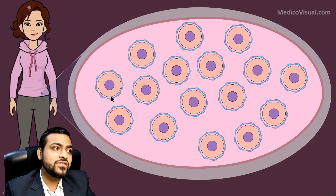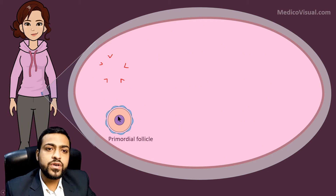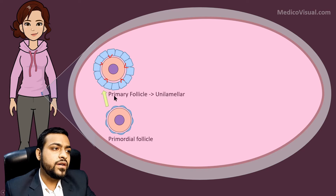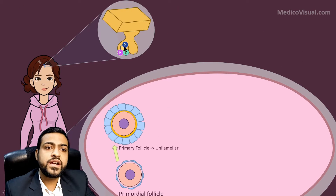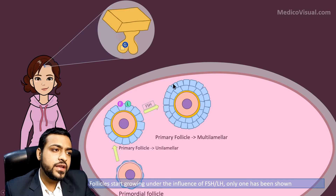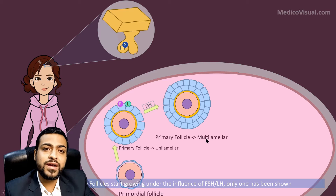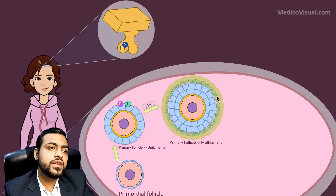This young teenage girl is just starting puberty, and her ovary consists of lots of primordial follicles, each containing a primary oocyte surrounded by a layer of follicular cells. The follicular cells grow and form a primary follicle, along with a glycoprotein coat called zona pellucida. Follicular cells cannot proliferate without orders from FSH and LH, which are released under the orders of GnRH. These gonadotropins cause proliferation of follicular cells, making the follicle multilayered — a multilaminar primary follicle. Interstitial cells around it then form two layers: theca interna, which is more cellular, and theca externa, which is more vascular and less cellular.